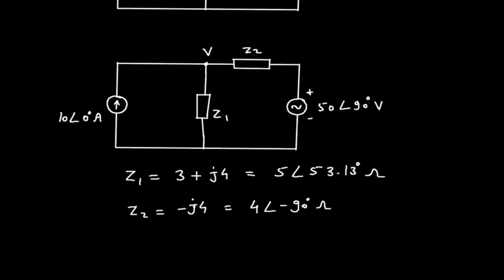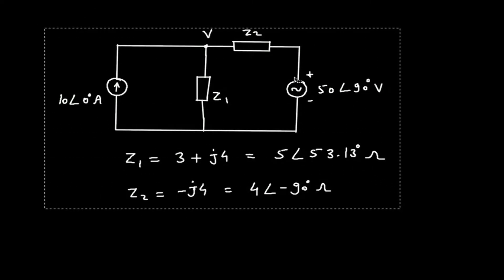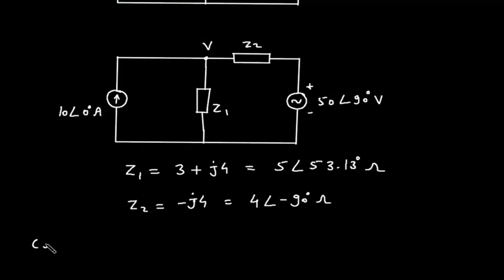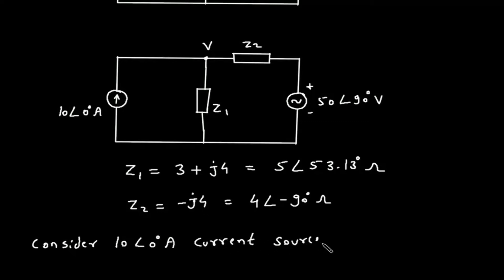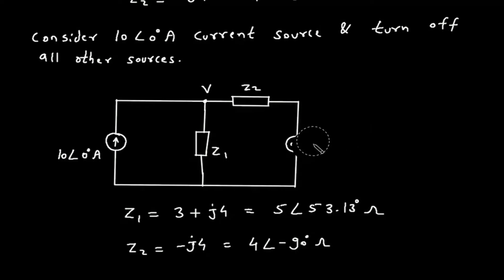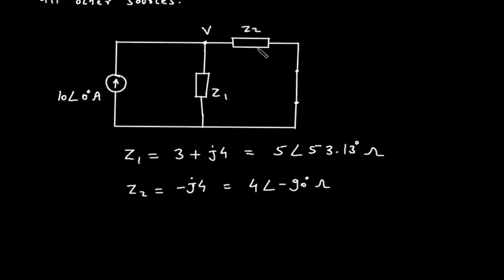We have to use superposition theorem here. This is an AC circuit because it contains an AC source. First, we will consider the 10 at an angle of 0 degree ampere current source and turn off all other sources. If we turn off the voltage source, it will be short circuited. With the short circuit in place, Z1 and Z2 are in parallel.